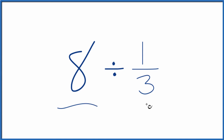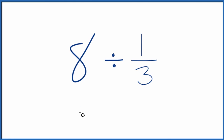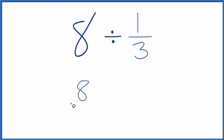Let's divide 8 by 1 third. Here's how you do it. So instead of 8, let's call this 8 over 1. It's still 8 — we're just dividing by 1 — but now we have a fraction. That makes this a lot easier.